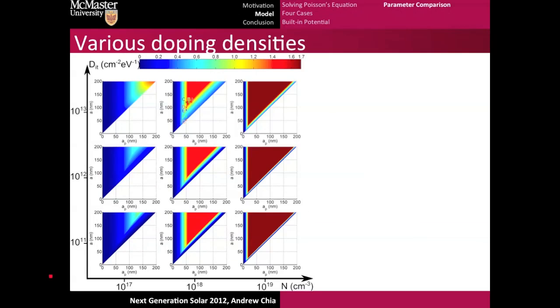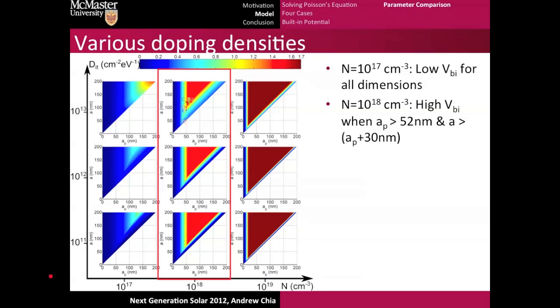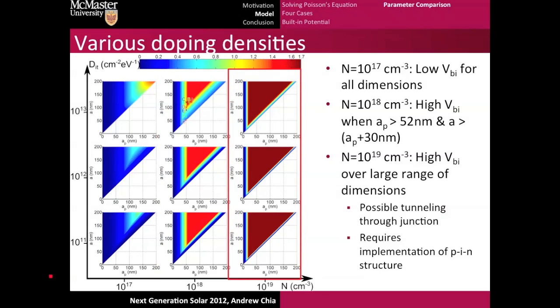We could translate these to built-in potentials, and as expected, if we compare it to the color scale for the 10 to the 17 wires, the built-in potential is very low for all dimensions. For the 10 to the 18 wires, the built-in potential is only high within each of these triangular regions, which is only some part of the total space. Finally, for the highly doped nanowires, you have a high built-in potential over a large range of dimensions. But the problem here is that with such high doping densities, you have possible tunneling through the junction. So it probably requires the implementation of some PIN structure.